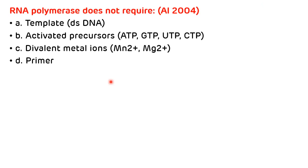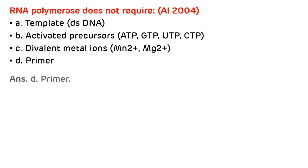Another question from All India 2004: RNA polymerase does not require which of the following? Options are template, activated precursors, divalent metal ions, and primer. RNA polymerase requires a template, activated precursors, and magnesium and manganese ions, but it does not require a primer. The correct answer is D. A primer is required in the replication process, not transcription.